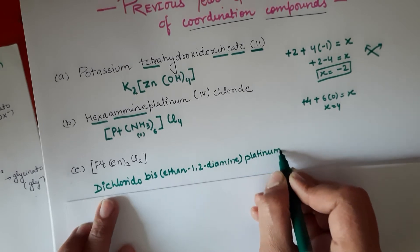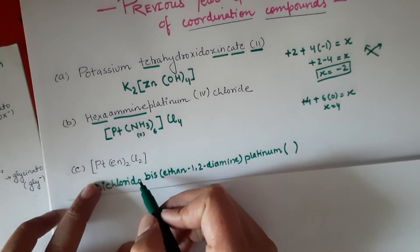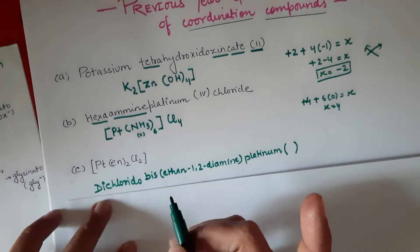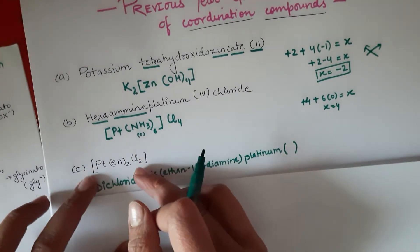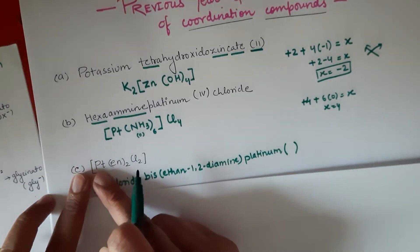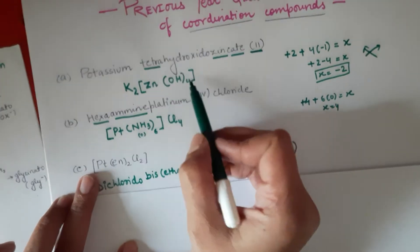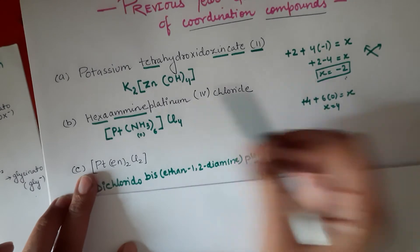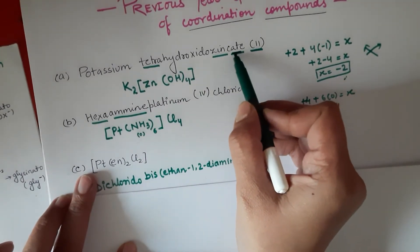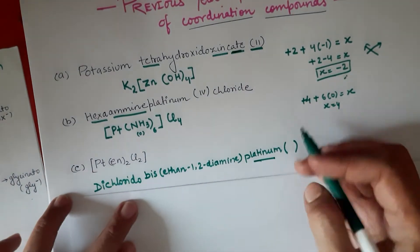Then we write platinum — why platinum and not platinate? Because it's a neutral coordination sphere. If a coordination sphere is neutral or positively charged, we write the name of the central metal atom as it is. But if the coordination sphere has a minus charge — as in the earlier example with −2 charge — we write 'zincate', not zinc.